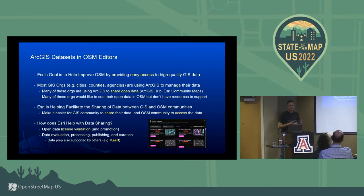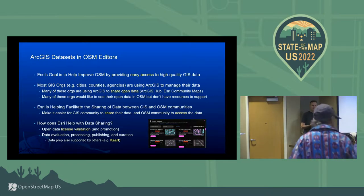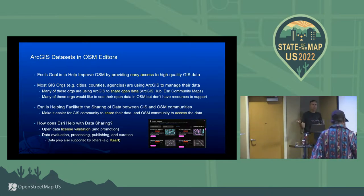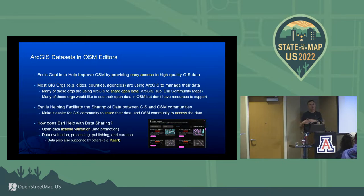Esri's role is primarily: validating that the data is useful in OSM, validating that the license is compatible for use with OSM, and encouraging users to share their data in open licenses that are compatible. In many cases we are doing the data prep — the transformation into the OSM-friendly format. But we're also working with other organizations like CART, who volunteered to help do some of this data prep with us. It's not necessary that Esri or CART does it; anybody could do it following some basic steps.